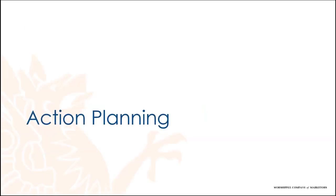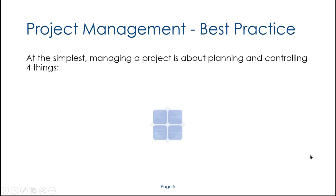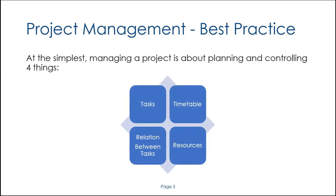Let me start by looking at the general concept of action planning — to answer the question who does what and when — and look at the variables which we have under our control. The four main areas in project management begin with tasks: the individual activities that need to be completed which make up the totality of the project. A task list is the first thing you'll see in most project management systems.